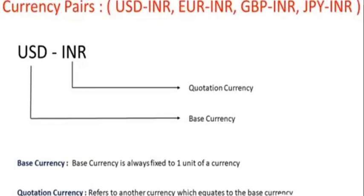In forex trading there is a quotation currency and a base currency. When we trade in currencies we have to decide what our base currency will be, because the quotation currency will always be INR — the rupee. For the base currency we can select dollar, euro, pound, or yen. The meaning of base currency is: to buy one unit of that currency, how many rupees do we have to pay? As per yesterday's market, to buy one dollar we have to pay around 82 rupees.